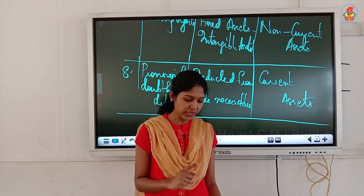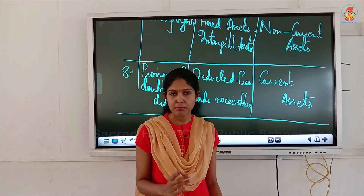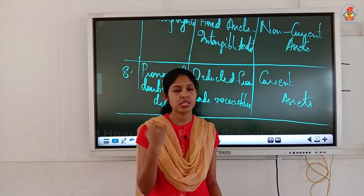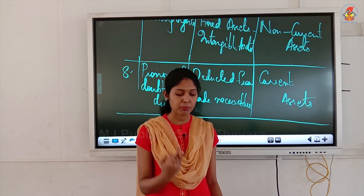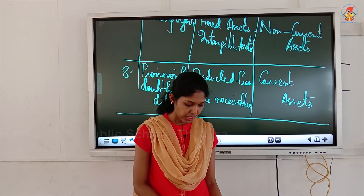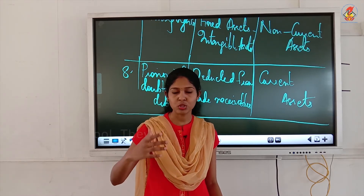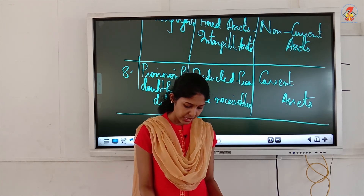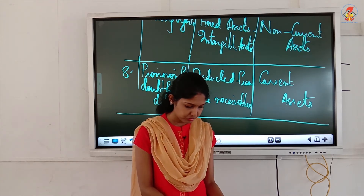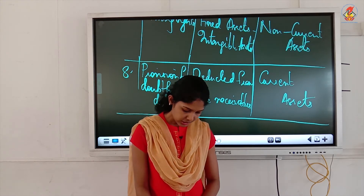Fifth one: short-term loans. The subhead is short-term borrowings and the major head is current liabilities. Then long-term loans: the reverse — subhead is long-term borrowings and the major head is non-current liabilities.